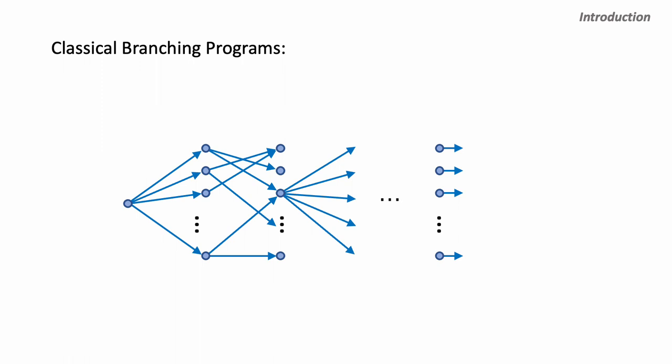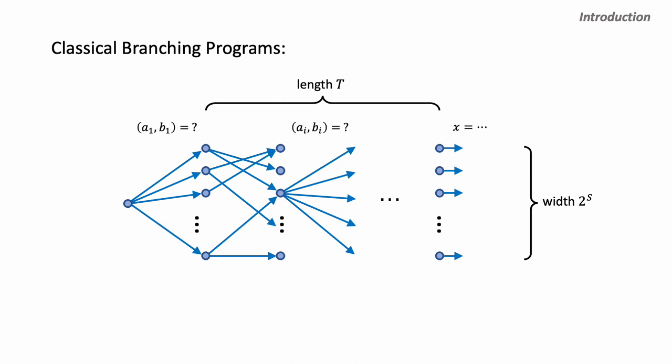In the classical model, to bound memory-sample tradeoffs, we use layered branching programs. These are directed acyclic graphs with nodes arranged in layers. You start with the first node on the leftmost side, and depending on the first sample A1 and B1, you branch out to nodes in the next layer. Similarly, if you are in the middle of the graph, you branch out depending on the current sample. The nodes on the last layer output a guess of the secret vector x. The length of the branching program equals the number of samples the learning algorithm needs to see, and the width is basically two to the size of the classical memory. In this model, we do not care about computational power — only the total number of samples and total amount of memory.